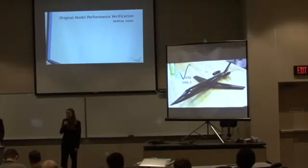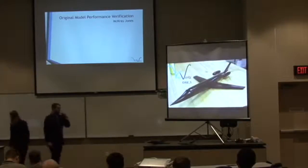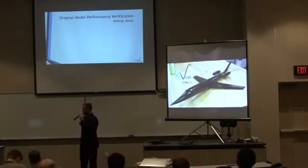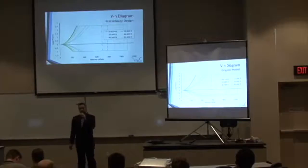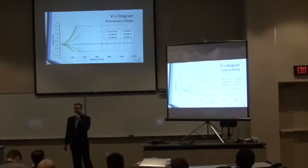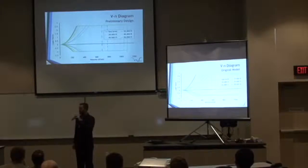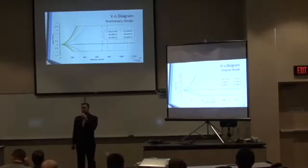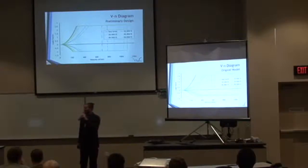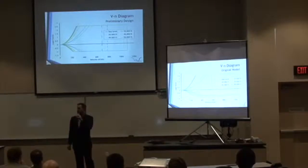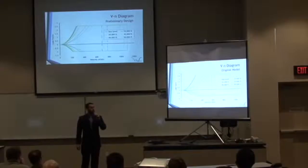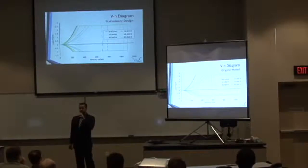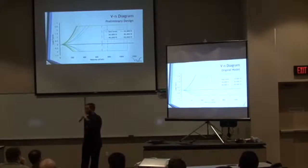Thank you. I'm going to cover the original model's performance verification. The first step is our VN diagram, or flight envelope. On the primary screen is the flight envelope for the preliminary design and on the secondary screen for the original model. The stall lines are for 2.5 Gs at altitudes from sea level to 50,000 feet. Stall lines translate to increasing velocity for the original model due to a lower CL max. The dynamic pressure limits on the right decrease for the original model due to increased drag.